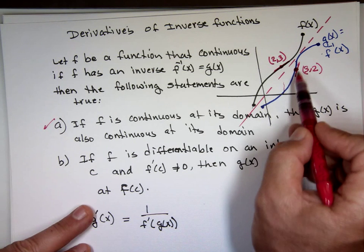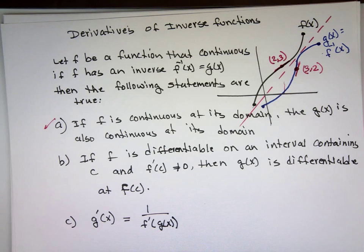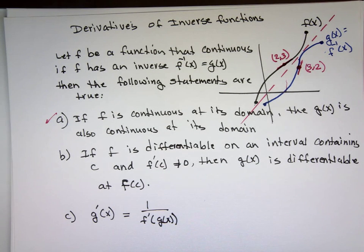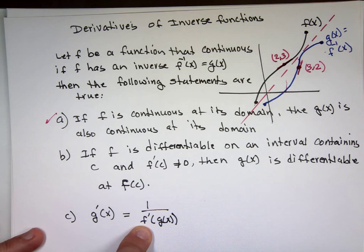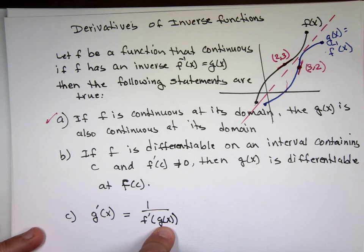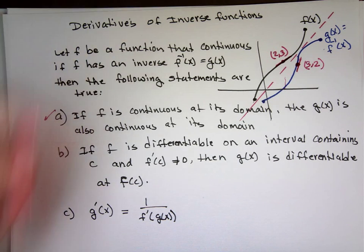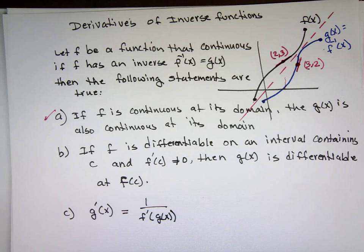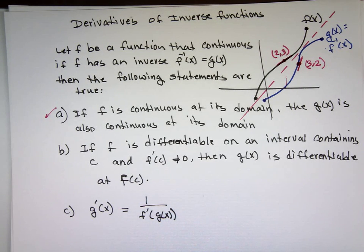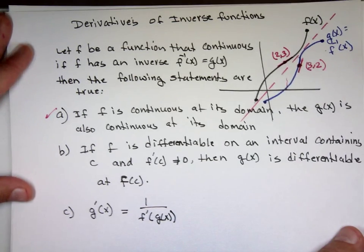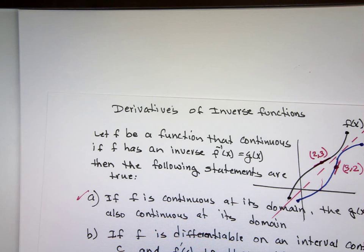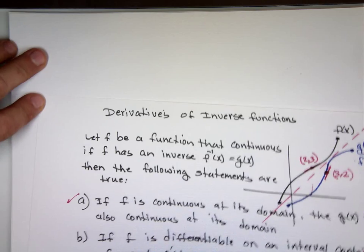A lot of times I don't want to take the inverse and find its derivative, because that says find the inverse function first, then find the derivative. g sub x is the inverse: find the inverse first, then find the derivative for my function and plug it in. That's a lot of work. Can I do it quicker? The answer is yes, using that equation. But let's take an example first to see if equation c is really true.